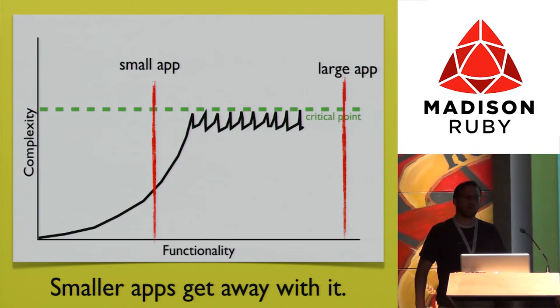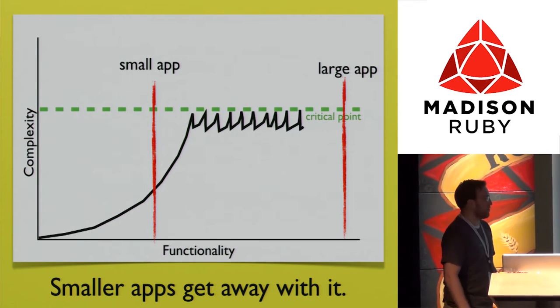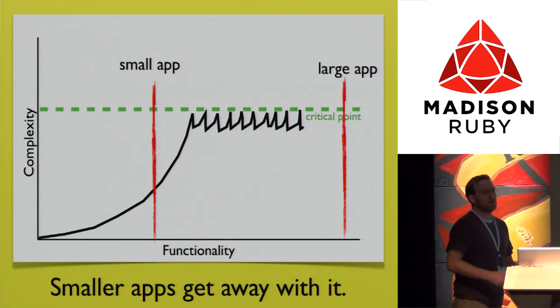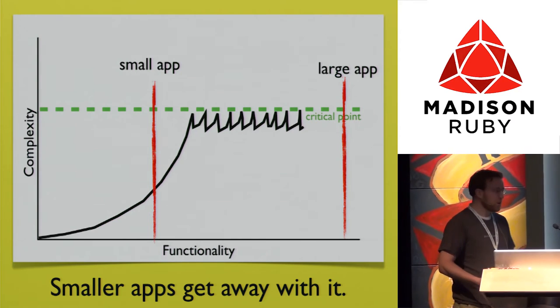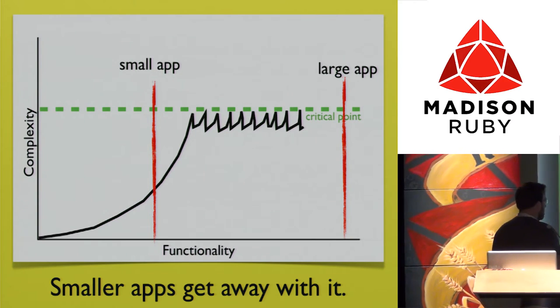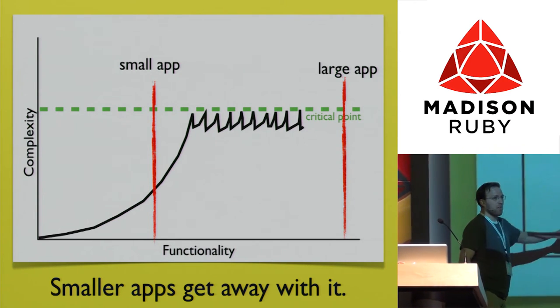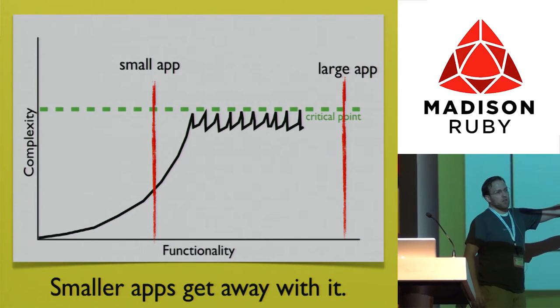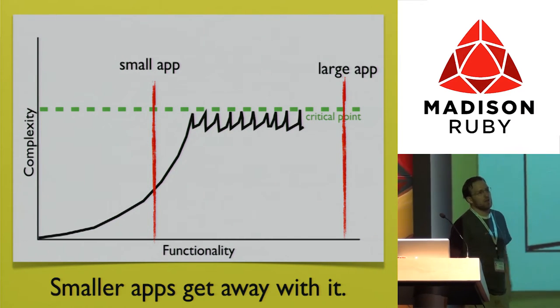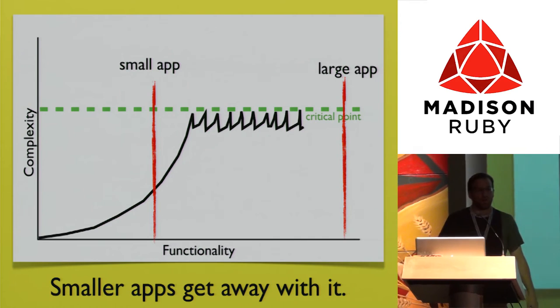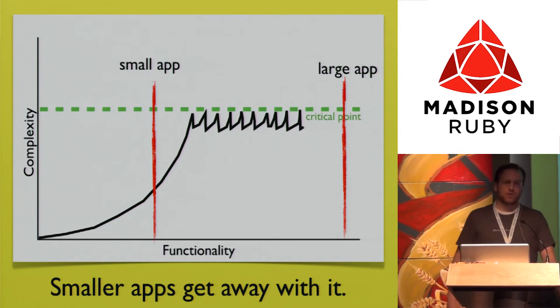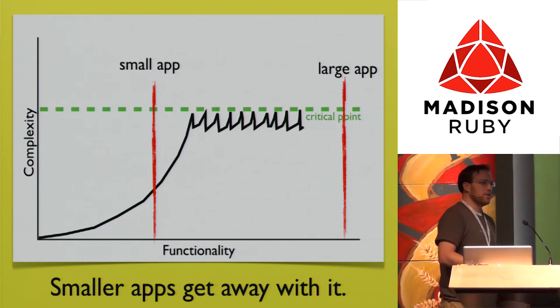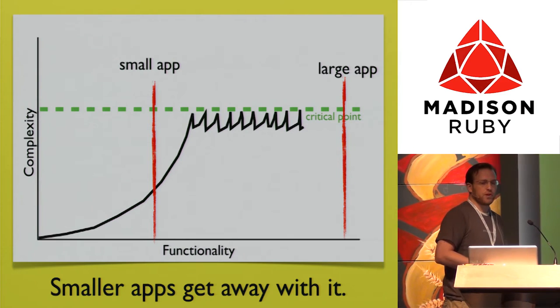I notice this with a lot of junior devs who have worked on really small web apps. They come onto a team working on a larger app and try to take all these practices from the small app and get away with it on the larger app, but they get bit. The way they're designing the application, the way they're distributing responsibilities in their code, just doesn't work that well for larger, longer-running applications.